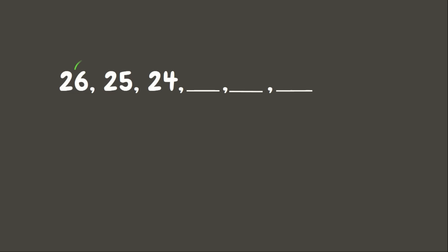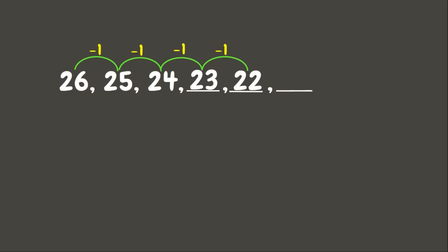Let's do another example. This time we have 26, 25, 24. As you can see, the sequence is decreasing, so it may involve subtraction or division. We subtract 1 each time: 26−1=25, 25−1=24, 24−1=23, then 22, and then 21. Therefore our common difference is 1.